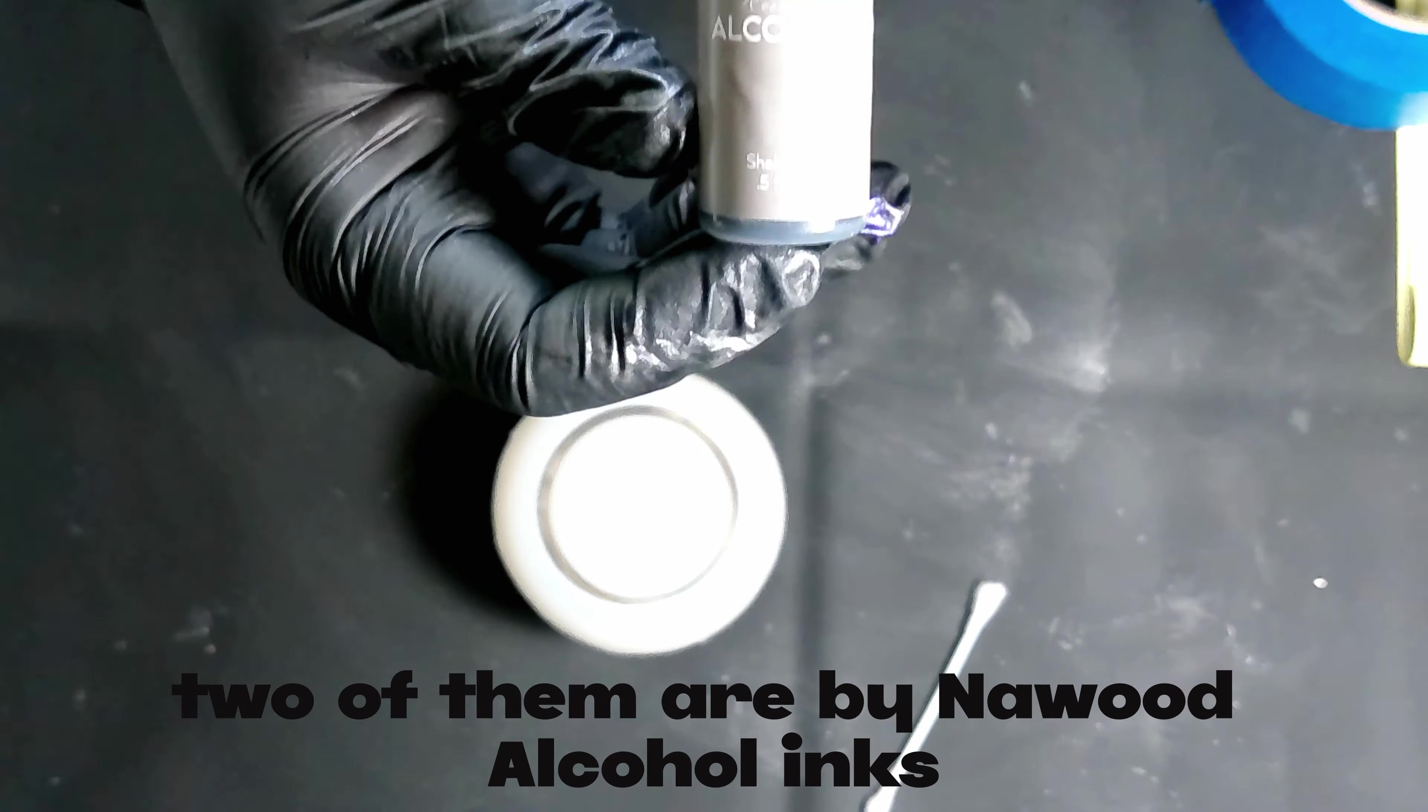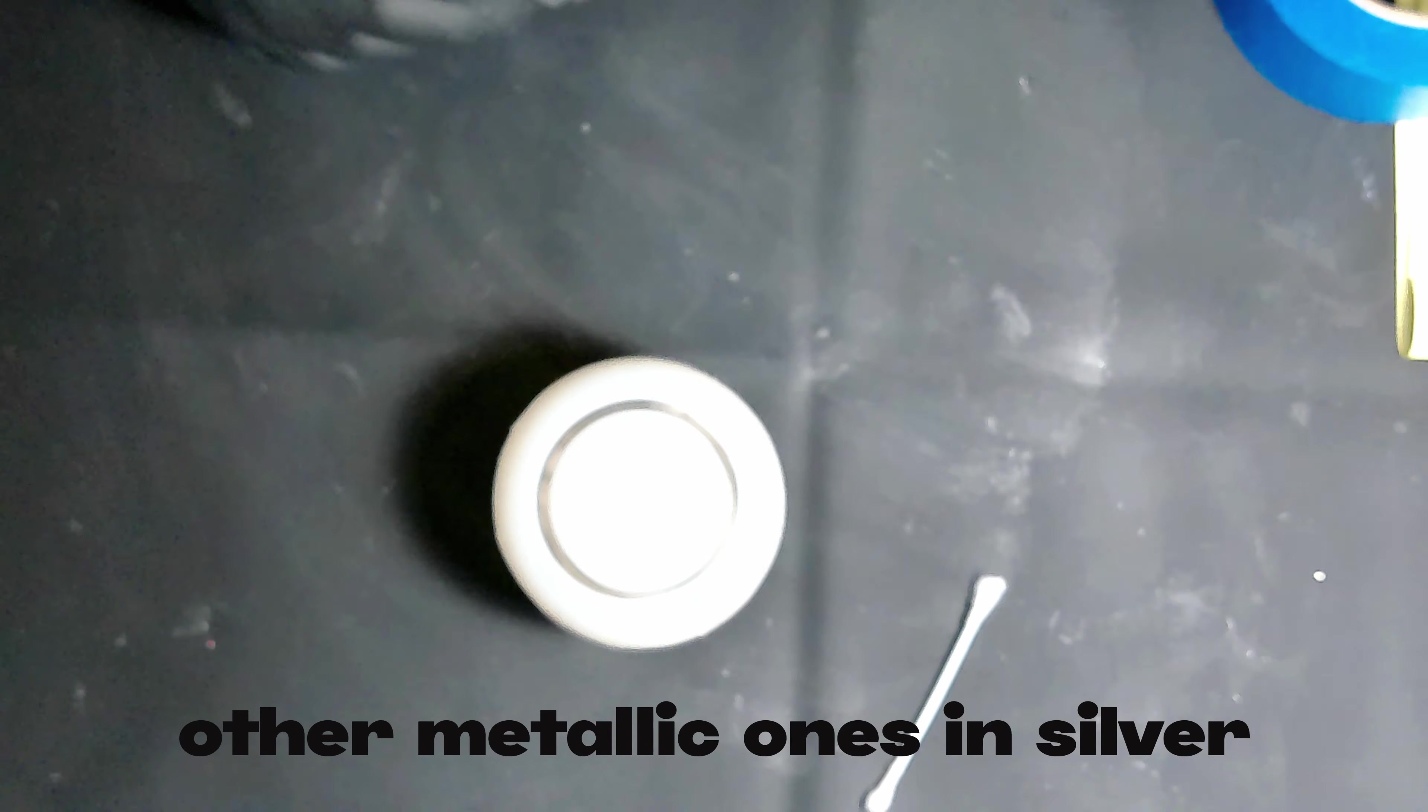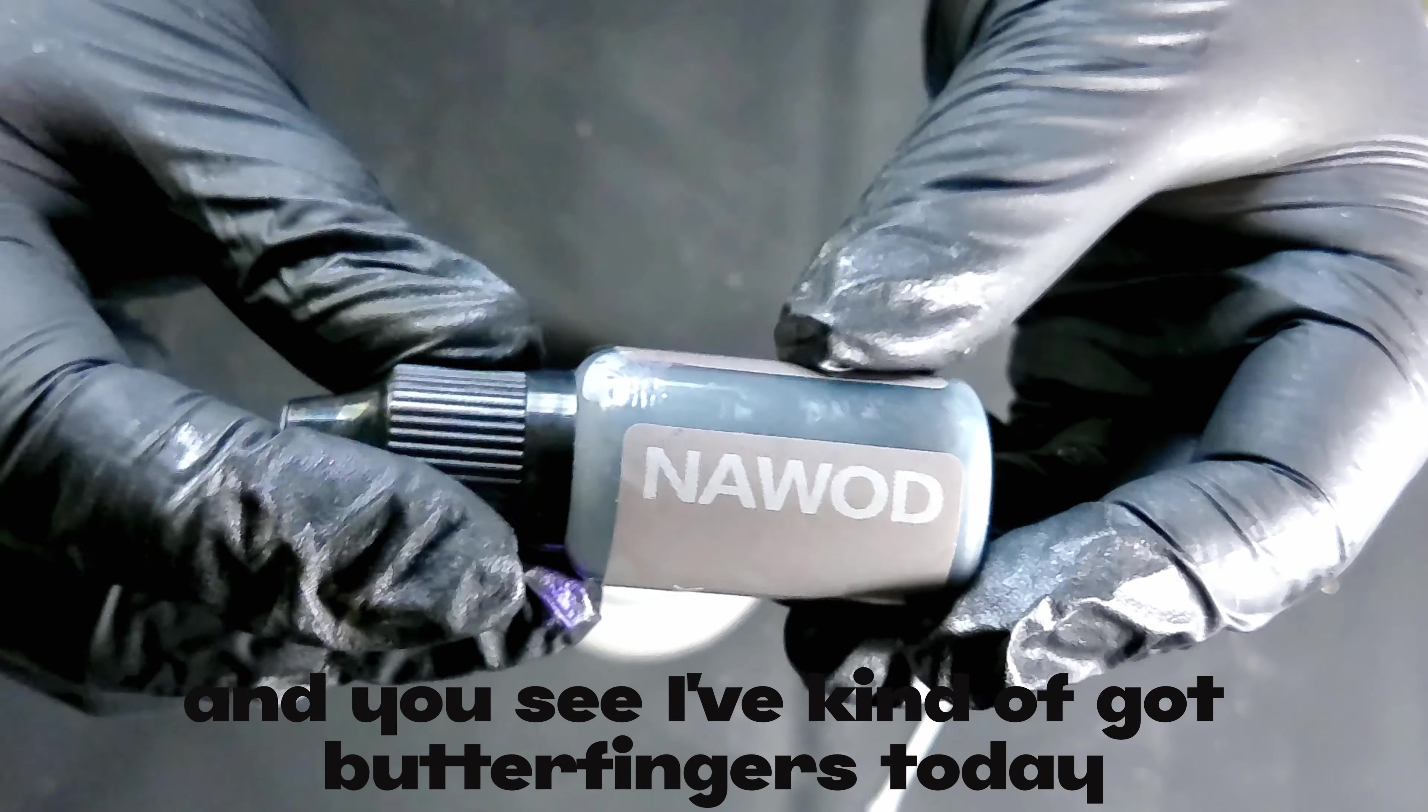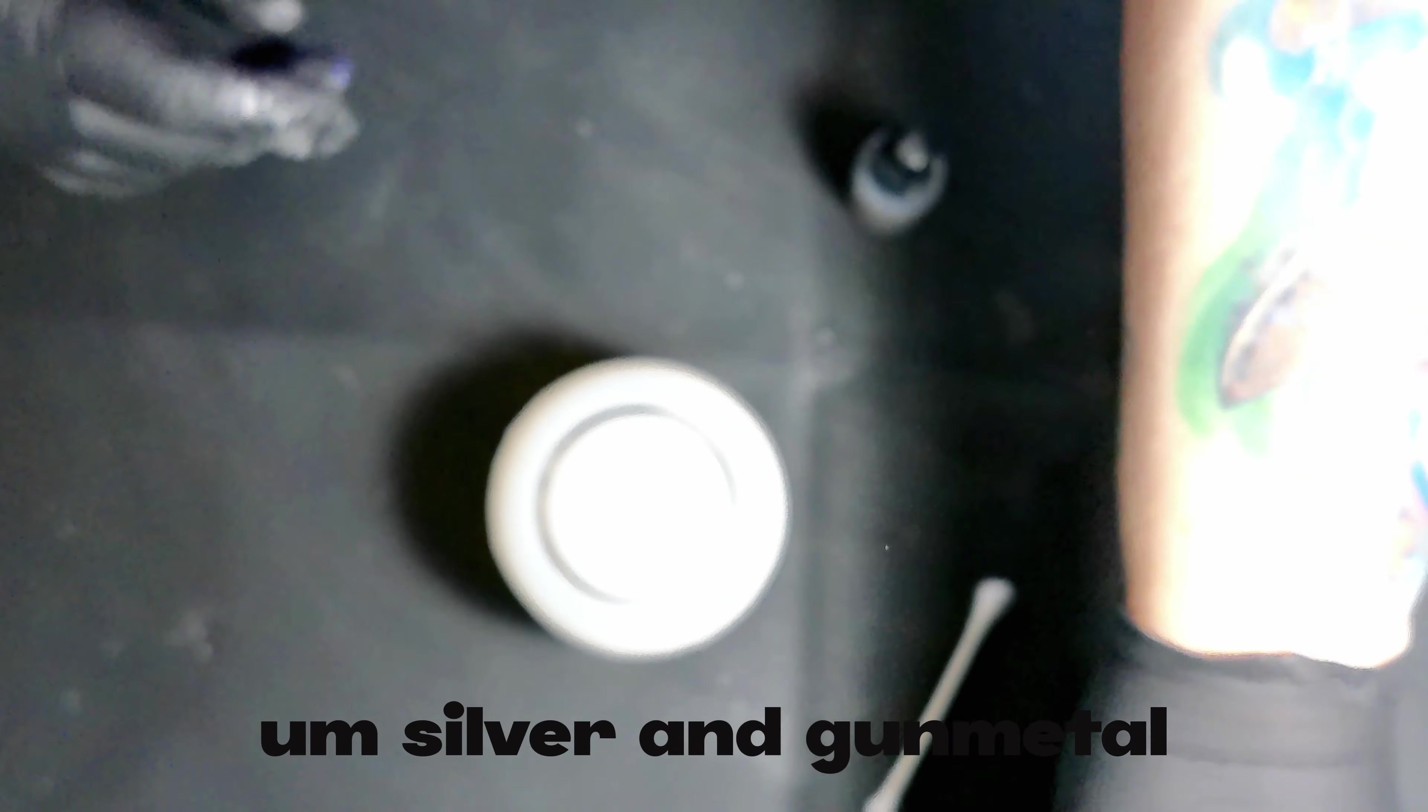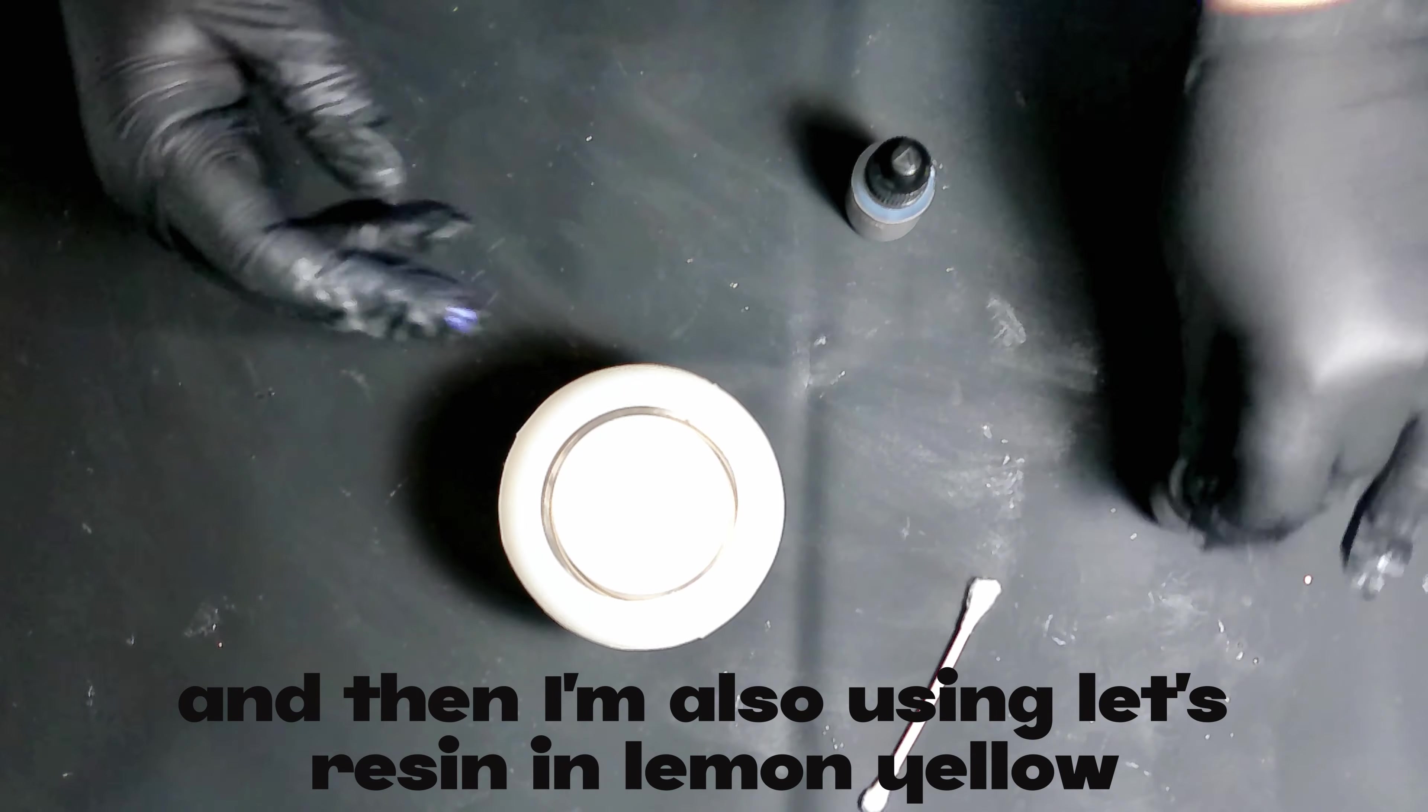So the three colors that I'm choosing today, two of them are by Nayward alcohol inks. They're the metallic ones in silver and, you see I've kind of got butterfingers today, silver and gunmetal. And then I'm also using Lutz resin in lemon yellow.